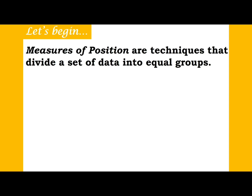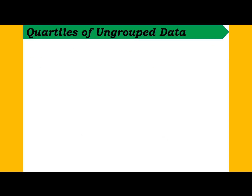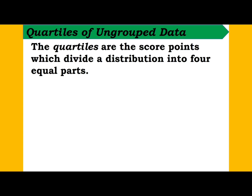What are measures of position? Measures of position are techniques that divide a set of data into equal groups. We have what we call the quartiles, the deciles, and percentiles. Let's start with the quartiles of ungrouped data. Quartiles are the score points which divide a distribution into four equal parts.